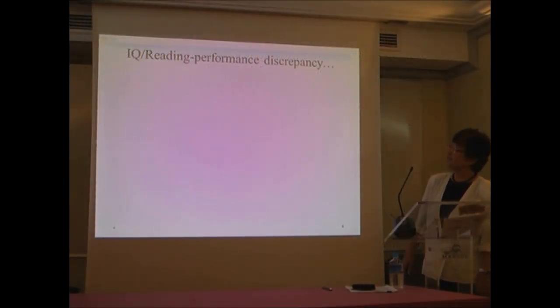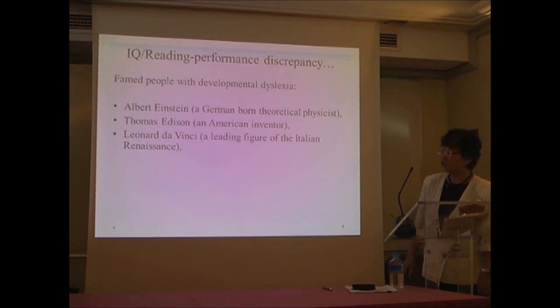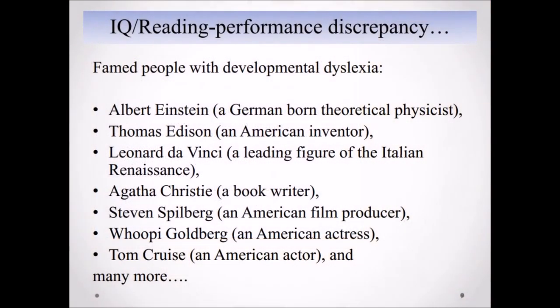This is illustrated by pretty famous people who are said to have dyslexia. Einstein, Thomas Edison, Leonardo da Vinci, Agatha Christie, Steven Spielberg, Whoopi Goldberg, Tom Cruise. Although some of the people may say, I don't like them, it's really irrelevant. These people are said to have dyslexia, but they are all doing a very great job. So the dyslexia can be overcome.